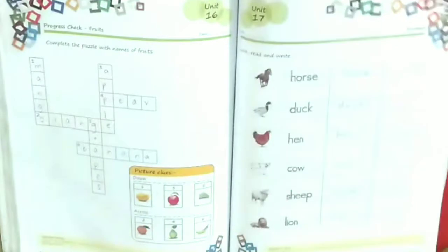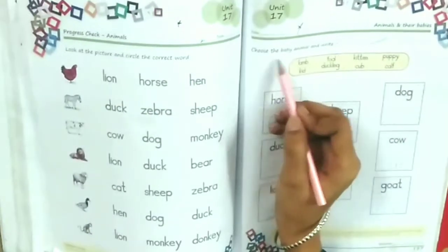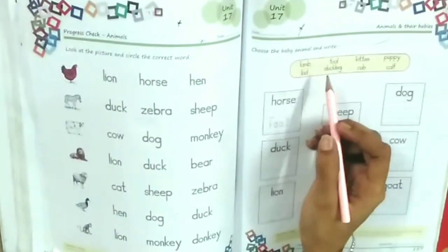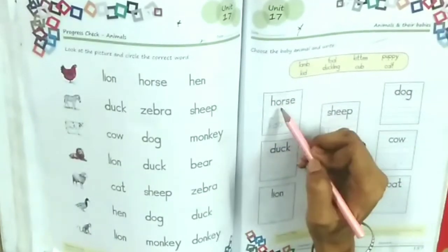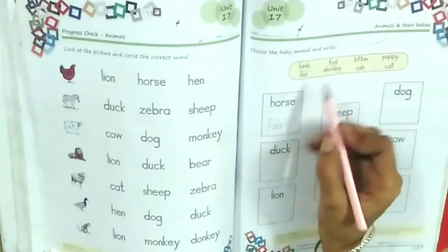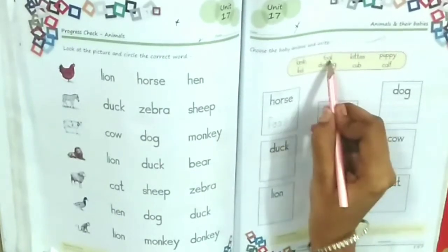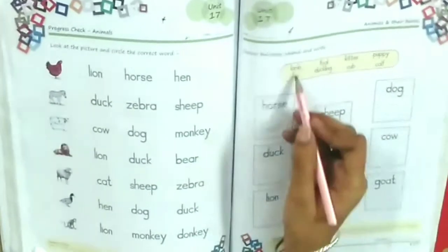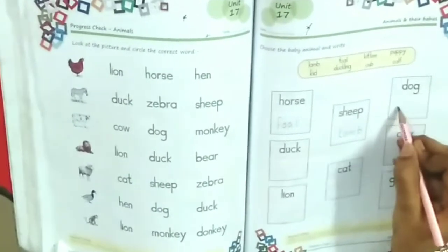Then page number 57. The question is: choose the baby animal and write. These are the baby animals. Each animal has a baby animal. We have to choose it here and write. Horse is a foal, sheep is a lamb, dog is a puppy.